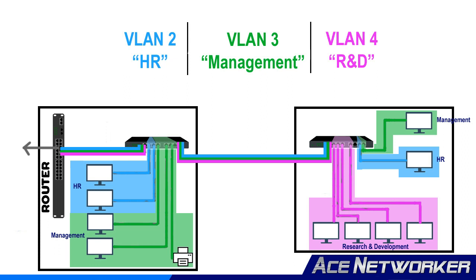Broadcasts in each VLAN are not seen or dealt with by computers and devices in the other VLANs. By doing so, you've prevented all devices in the same company from being on the same segment with excessive traffic, collisions, and unrestricted access to everything — which is highly frowned upon. You are now controlling the traffic, the collisions, and the access within each group simply by using separate VLANs.